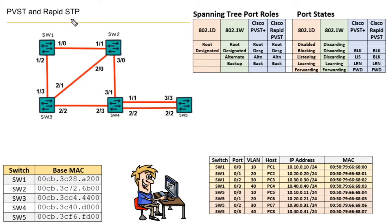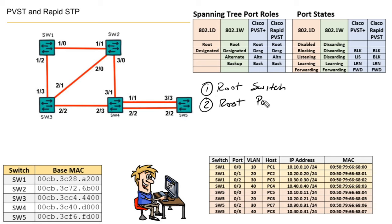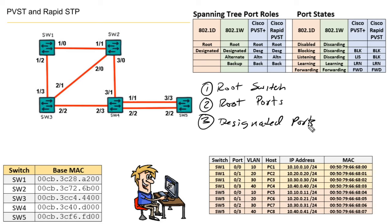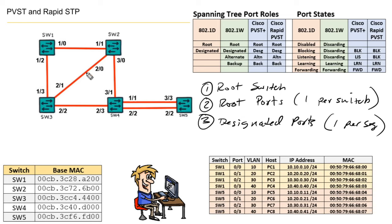In the case of rapid spanning tree or per-VLAN spanning tree, it does the same job. It identifies root switches — like King Kong — and then all the non-root bridges, which identify root ports. Root ports are the ports forwarding in the direction of the root. Then they decide on designated ports — ports that are forwarding away from the root. You can only have one root port per switch, and only one designated port per segment.